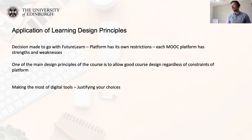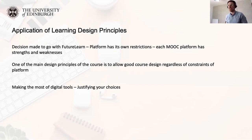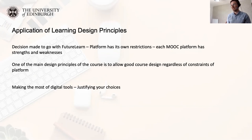We also looked at making the most of digital tools — justifying your choices within your courses. Accessibility is one we talk about a lot. It's about knowing what tools are available to you and what isn't, then working around that. The key point is: what platform are you working on, what are the restrictions, and how can you make that work for you? It should be about the content, not the platform or tools available.